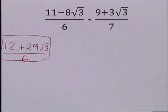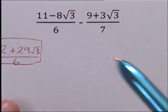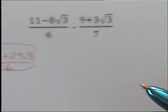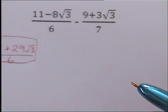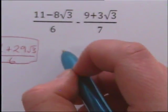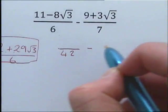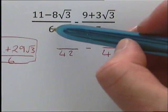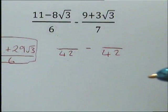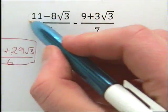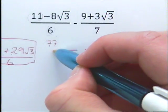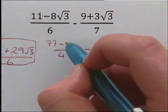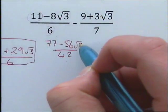Question 4. Similar again — we're just going to treat it as taking away our fractions. So we're going to make our bottom numbers the same. 6 times 7 gives us 42, so we're going to have 42 on the bottom, take away our other fraction which is also going to be 42 on the bottom. What did we have to times our 6 by to get to 42? We times it by 7. So then we're going to have to times our 11 by 7 to get 77, minus our 8 times 7, which is 56 root 3.